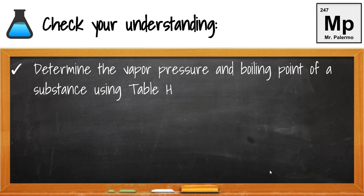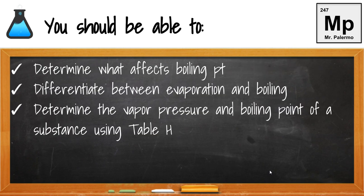Let's check your understanding. Can you determine the vapor pressure and boiling point of a substance using table H? At this point, you should be able to determine what affects boiling point, differentiate between boiling and evaporation, and determine the vapor pressure and boiling point of a substance using table H in our reference table.